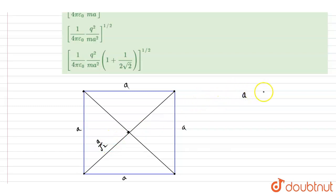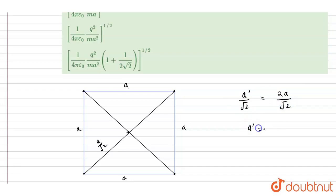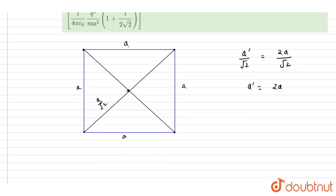By symmetry, the particles will always form a square. Let the new side length be a dash. The distance from center will then be a dash by root 2, and we want this to equal twice the original. So the side length of the square must become two times a.